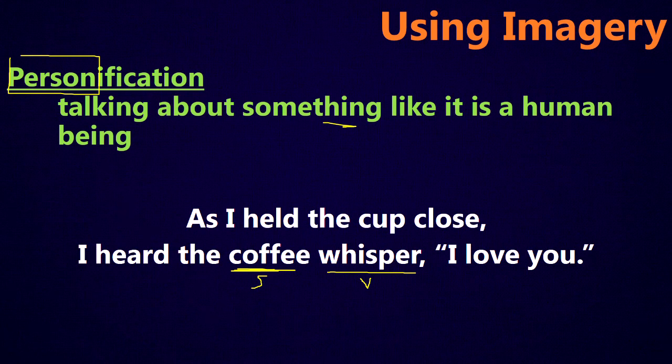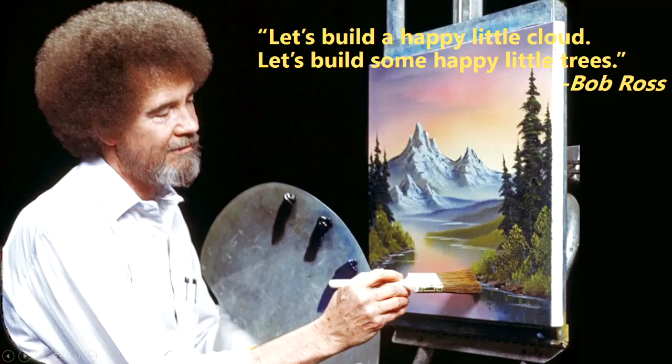So those forms of imagery were simile — using like or as — metaphor — talking about one thing like it's another — and personification — talking about a thing like it's a person. These are some very common ways that you can make your writing much, much more descriptive. Thanks for watching.